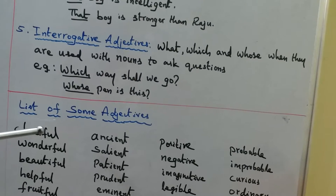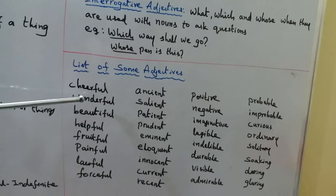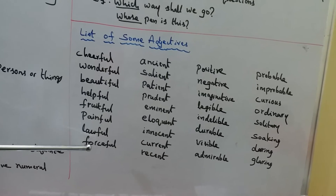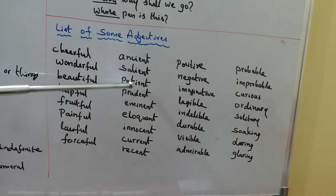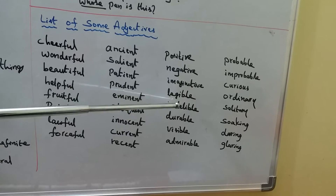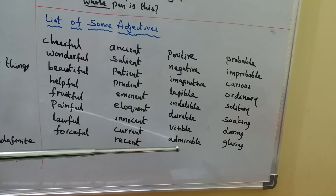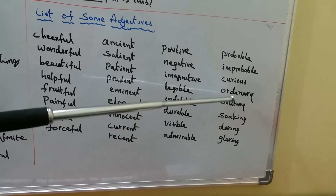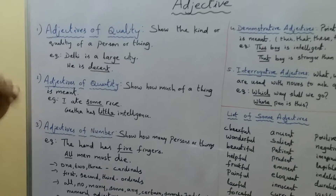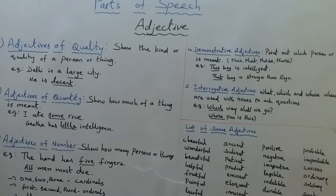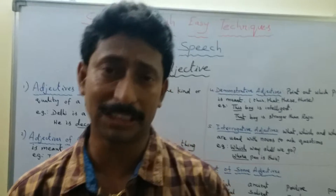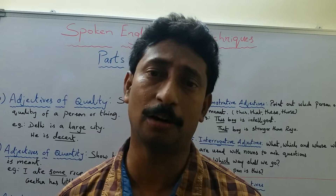This is all about the five categories of adjectives. Here is a list of some adjectives: cheerful, wonderful, beautiful, helpful, fruitful, painful, forceful, anxious, salient, patient, prudent, eminent, eloquent, innocent, current, recent, positive, negative, imaginative, legible, indelible, durable, visible, admirable, probable, improbable, curious, ordinary, solitary, soaking, daring, glaring, etc. Apart from these, color words like red, white, blue, black, and brown also fall under adjectives of quality.